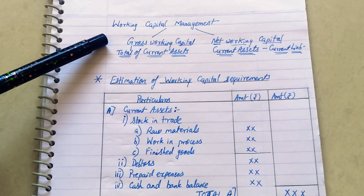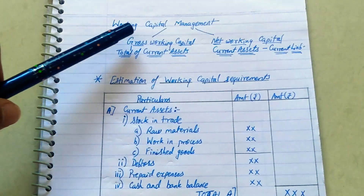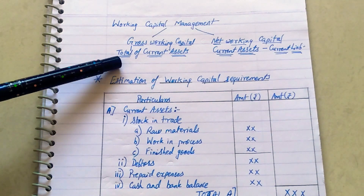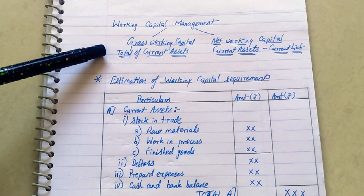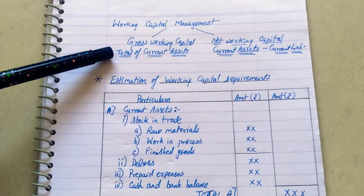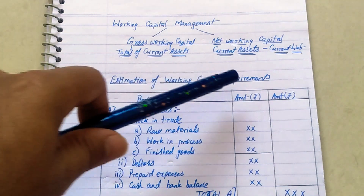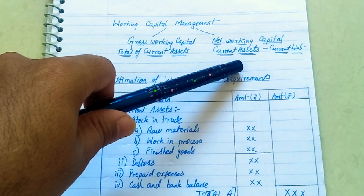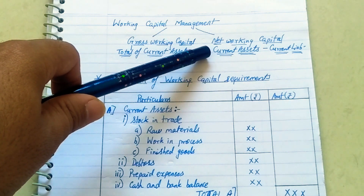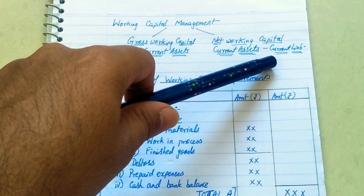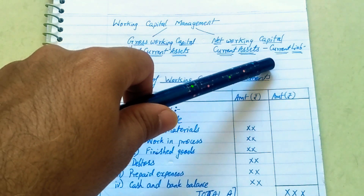There are two types of working capital: gross working capital and net working capital. Gross working capital is nothing but the total amount of current assets — when you add up all the current assets of your company, that is called gross working capital. When you deduct current liabilities from current assets, what you get is the net working capital. The simple formula is: net working capital = current assets minus current liabilities.